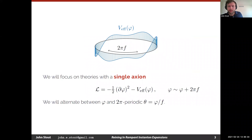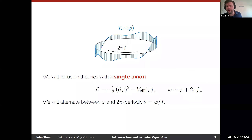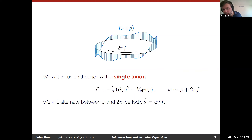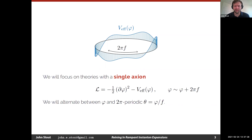For the entirety of this talk, I'll focus on the theory of a single axion. Its two-derivative effective Lagrangian has a kinetic term and an effective potential. One of the defining features of an axion is that it's a compact pseudoscalar with a field space circumference of 2πf, where f is the axion decay constant. Throughout this talk I'll alternate between φ and θ, which is 2π periodic, just by rescaling off the axion decay constant. It's a bit more convenient to work with θ to avoid factors of f.